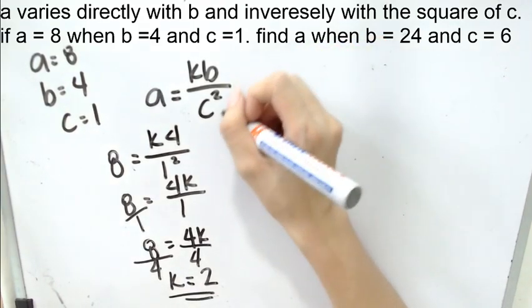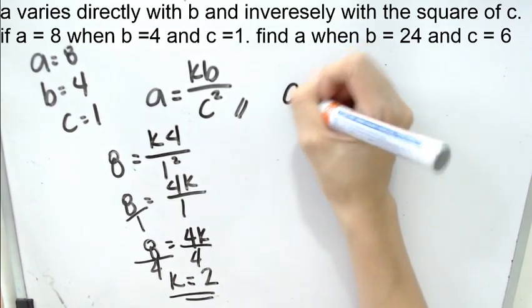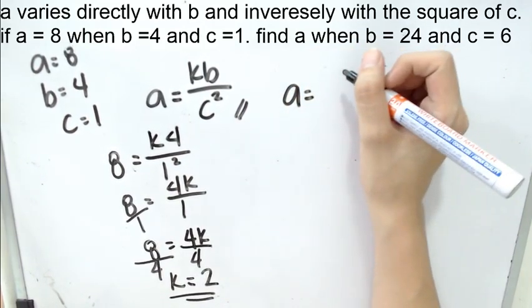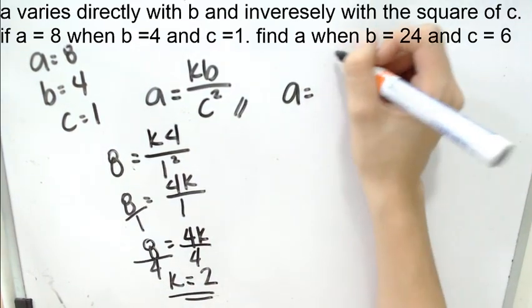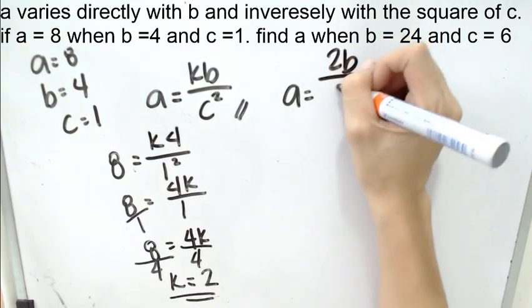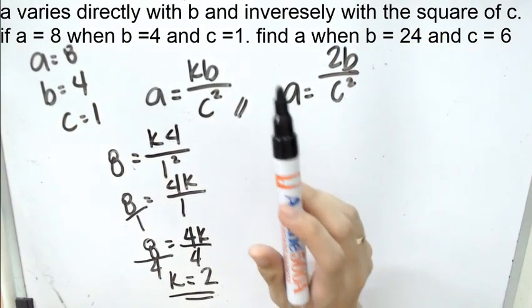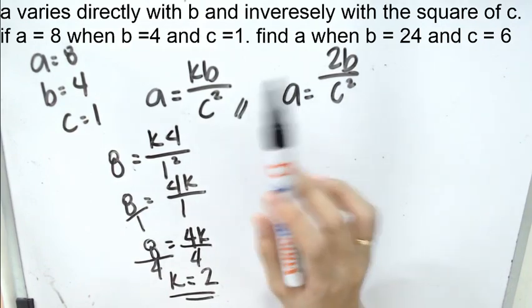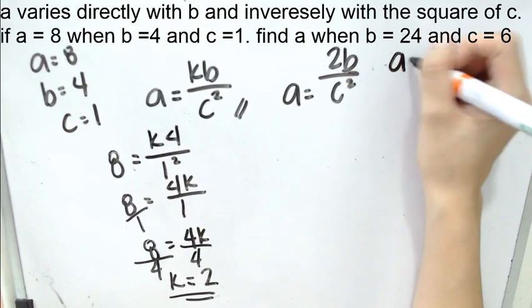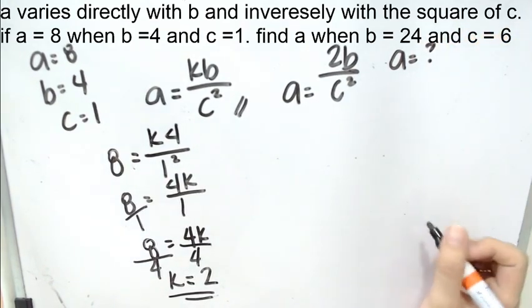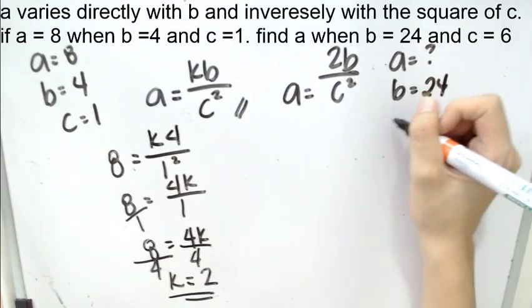Afterwards, we will write the formula earlier into another one. But this time around, we're going to change k into 2. And then we are going to read the last part of the statement, or the last part of the problem. Find a when b is 24, c is 6.